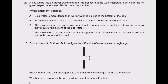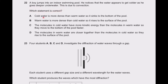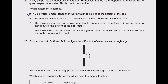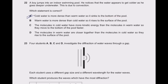Question 22: a boy jumps into an indoor swimming pool and notices the water appears to get colder as he goes deeper. This is due to convection. Cold water is more dense than warm water so it sinks to the bottom of the pool. Option A is the right answer.